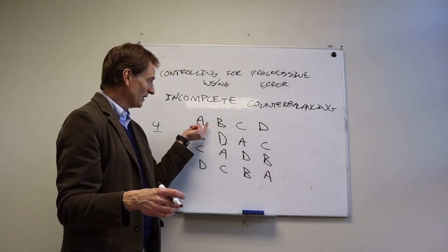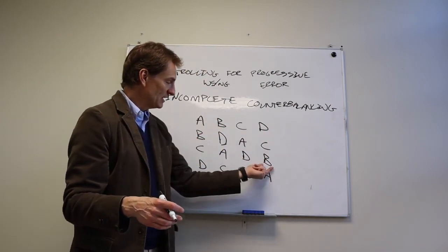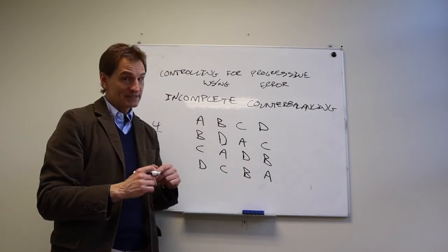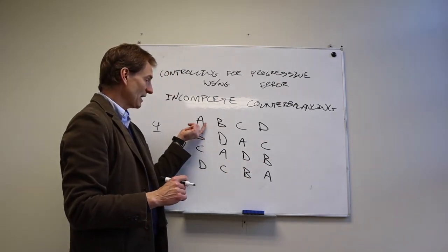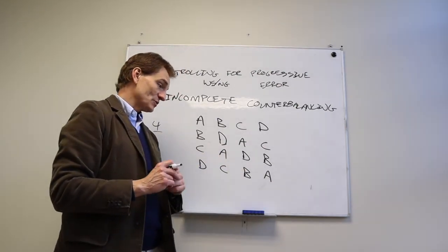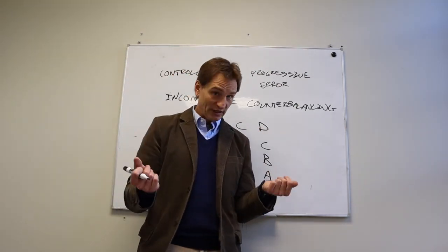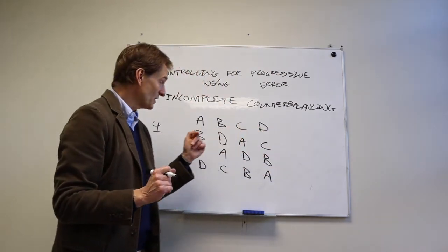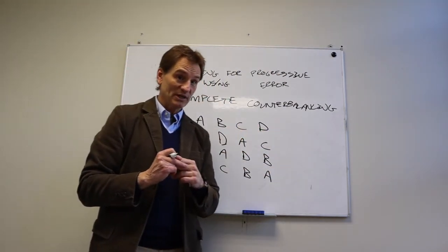It's called incomplete counterbalancing because no treatment ever follows another treatment more than once. So here B follows A. Here it's first. Here it follows D. Here it follows C. Similarly, A is first, A follows D, A follows C, A follows B. And so incomplete counterbalancing is what we use when we have four or more treatment conditions.